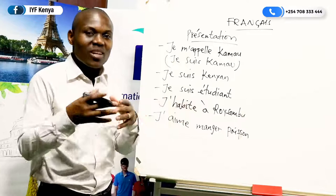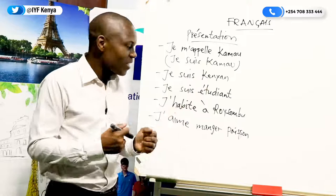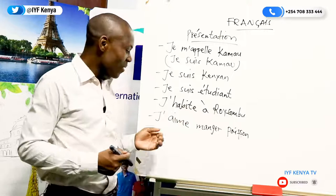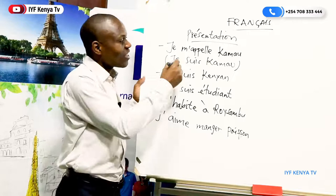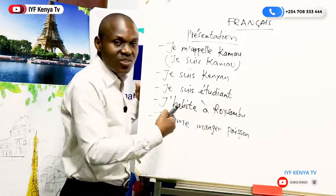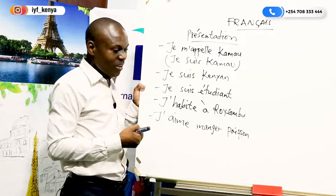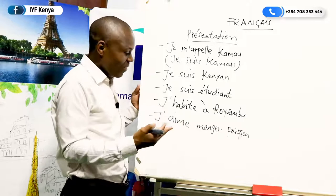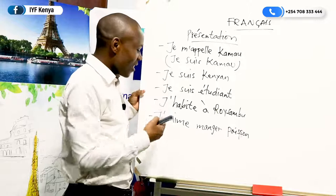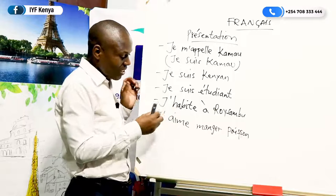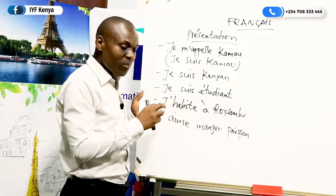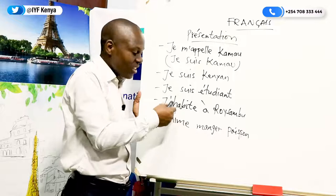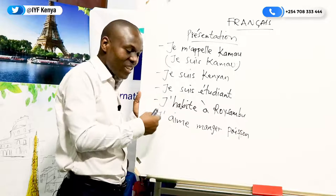Either you say je m'appelle Kamau or je suis Kamau — both mean the same thing. Then you have: je suis Kenyan, je suis étudiant, j'habite à Roissambo, j'aime manger poisson. Étudiant is student. For j'habite — don't separate these words. It's supposed to be written together. When you pronounce, you say j'habite, not 'j'habite' separated. This H is silent — in English you also have some H that are silent. So it is the A that sounds, giving you j'habite. J'habite à Roissambo.